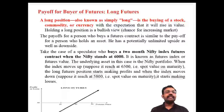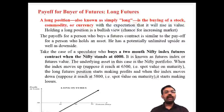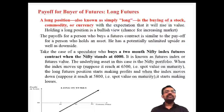Let's see an example. Suppose a speculator buys a 2-month Nifty index future. The Nifty index future is at 6,000 — that means the future index price is 6,000. So what should we look for? The underlying asset here is the Nifty portfolio, and the market price of that index future is 6,000.